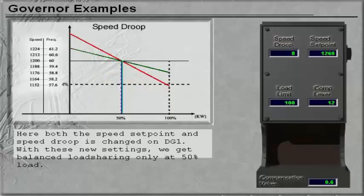Here both the speed set point and speed droop is changed on DG1. With these new settings we get balanced load sharing only at 50% load.